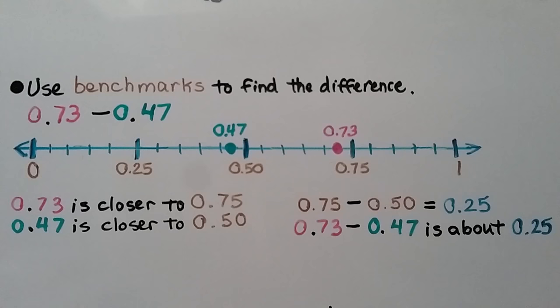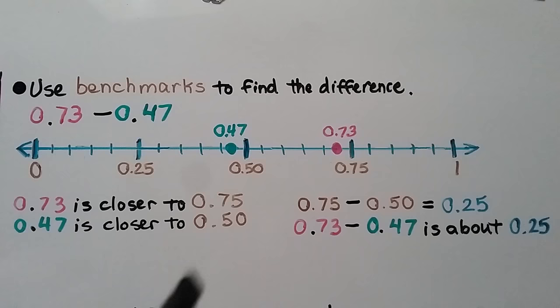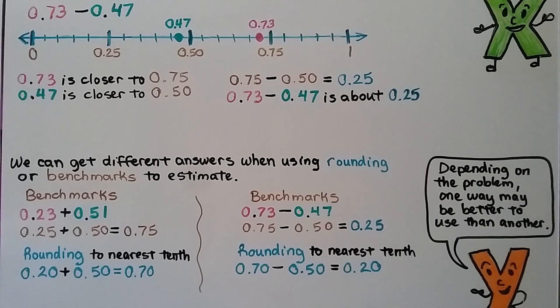We can use benchmarks to find the difference. We have 73 hundredths minus 47 hundredths. We locate them on the number line: 73 hundredths is close to 75 hundredths, and 47 hundredths is just below 50 hundredths. We subtract 75 hundredths minus 50 hundredths and get 25 hundredths. So 73 hundredths minus 47 hundredths is about 25 hundredths.